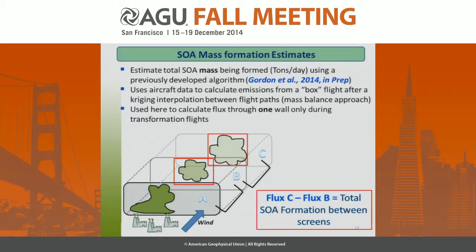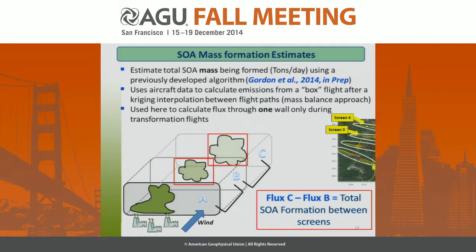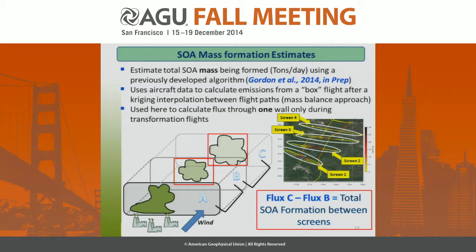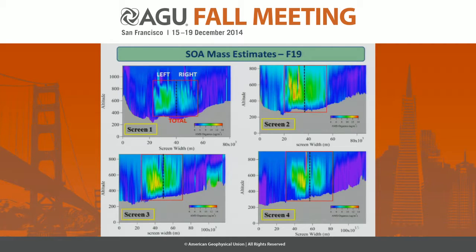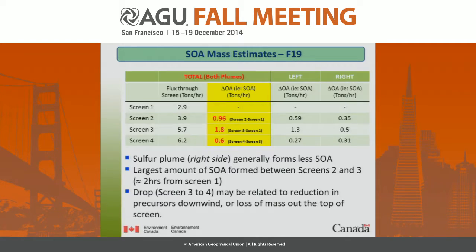Finally, we looked at the absolute amount of SOA mass being formed using an algorithm developed within our group. It uses aircraft data to calculate emissions from a box flight — what comes out minus what goes in must be what is being emitted — by interpolating between flight paths. In this case we calculated the flux through one wall, a screen. Subtracting the two screens gives the amount of SOA being formed between them. You can clearly see the oil sands plumes in each screen building and getting bigger. Integrating the concentration in the red boxes and subtracting gives the SOA formed.